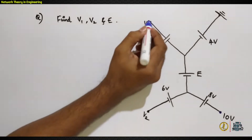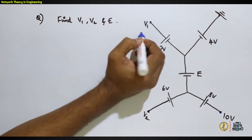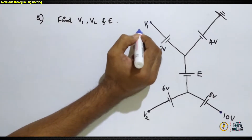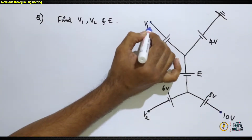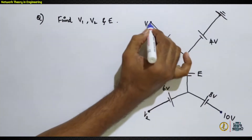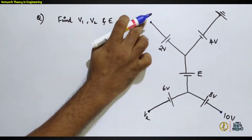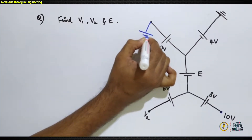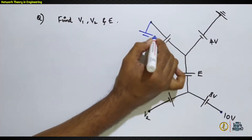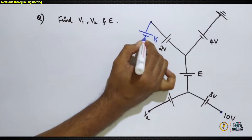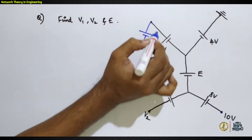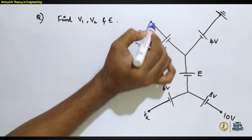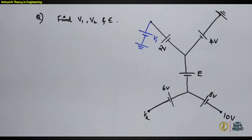Before applying KVL, we can do some modifications to the circuit. At this point, voltage v1 appears, so we can replace it with a voltage source with its positive polarity attached to this point and the negative polarity grounded. This is equivalent to the previous v1 — positive v1 appears here now just as before.